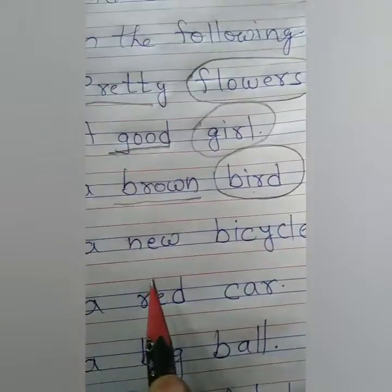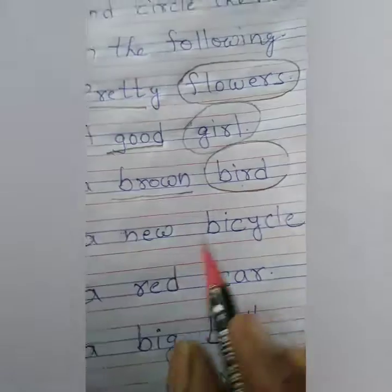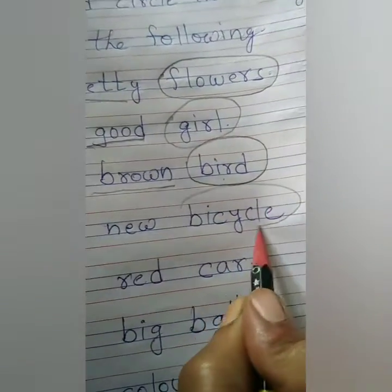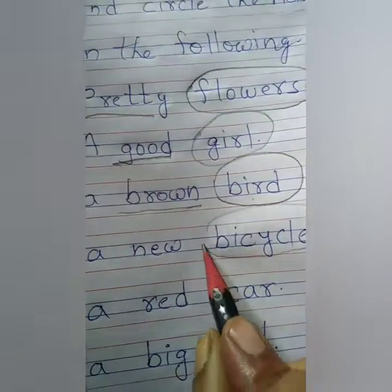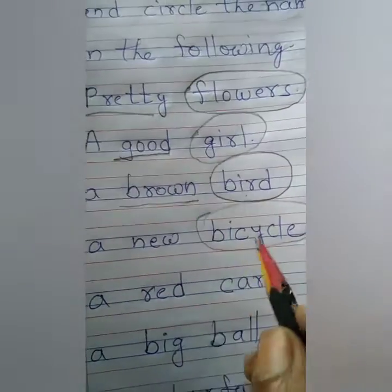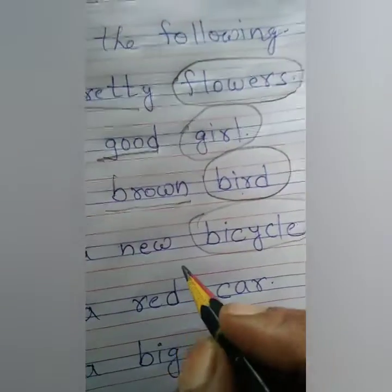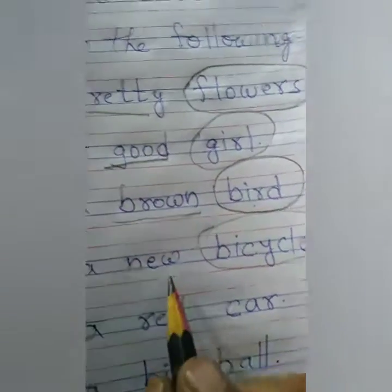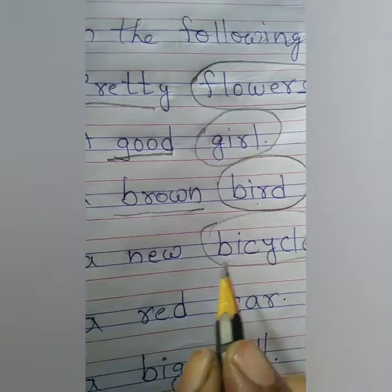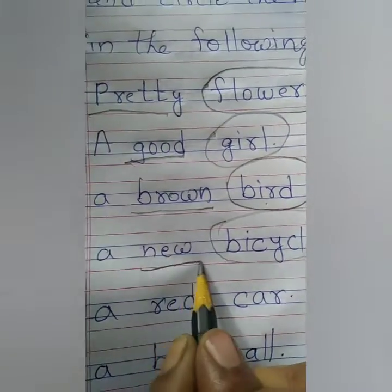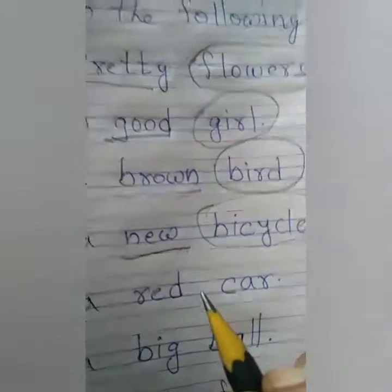A new bicycle. We are talking about a bicycle, so bicycle is our naming word. And how is the bicycle — old, new, small, big? Here 'new' is describing the bicycle, telling us the cycle is new. So the describing word is 'new'. We will underline 'new'.